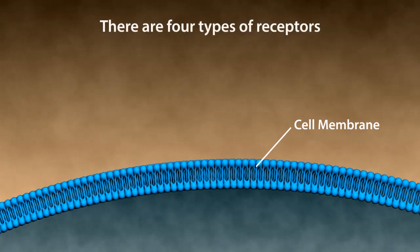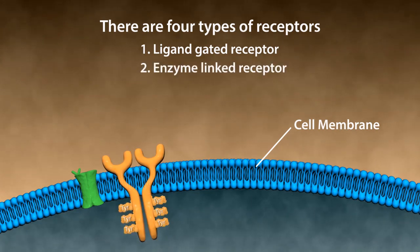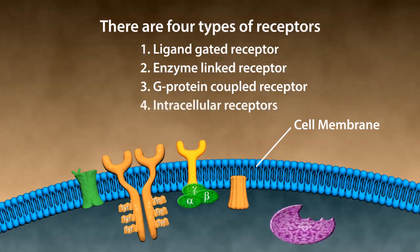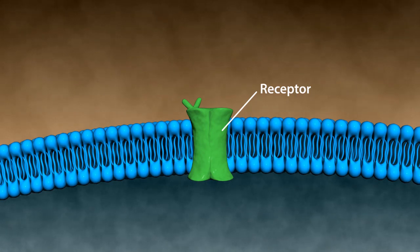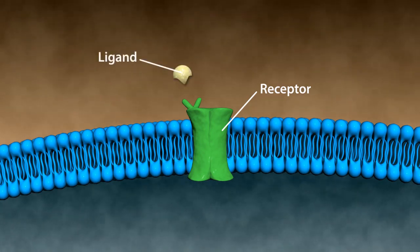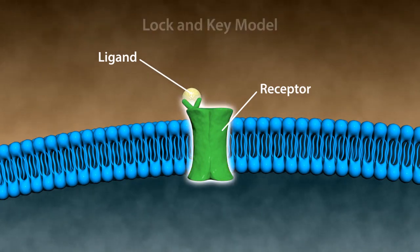There are four types of receptors: ligand-gated receptor, enzyme-linked receptor, G-protein-coupled receptor, and intracellular receptors. Receptors have a specific site to bind to molecules, or ligand. This is called a lock and key model.